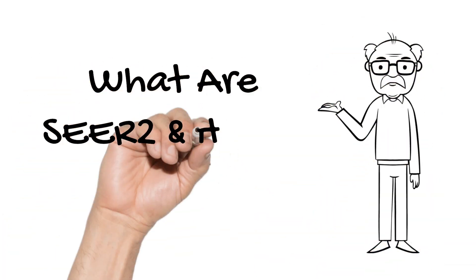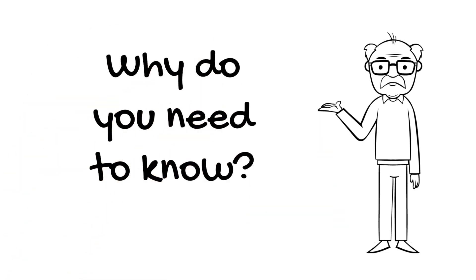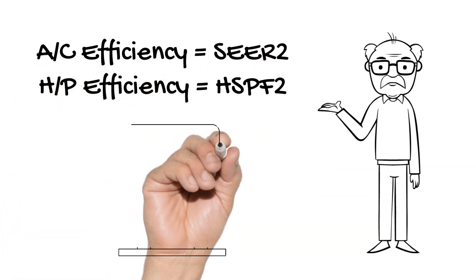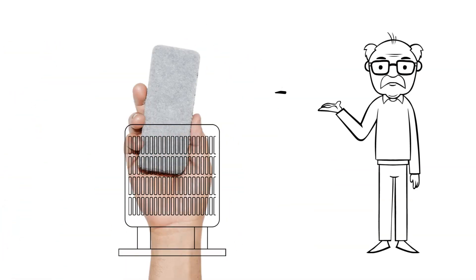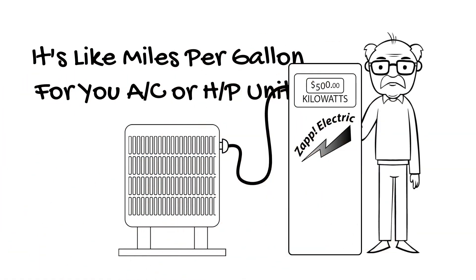What are SEER2 and HSPF2 and why do you need to know? Air conditioners and heat pumps have their efficiency described by these numbers. It's like miles per gallon for your heating and cooling equipment.